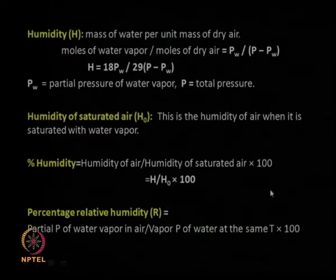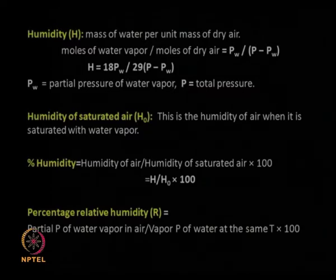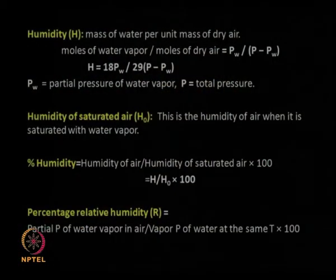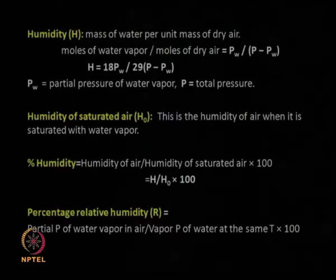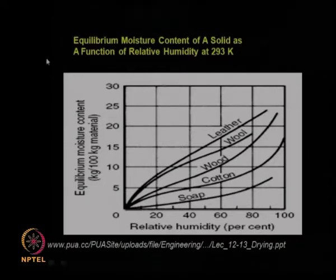Percentage relative humidity is the very important term which tells you how much water is present in the air and how much more the air can take up. If the percentage relative humidity is nearing 100, the air will not be able to take up any more water. These are important terminologies for understanding dry air, wet air, bound moisture, and unbound moisture. Each solid has a certain equilibrium moisture content depending on its solid properties, porosity, and the types of pores it has.